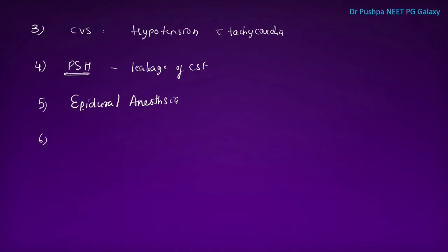Next important topic: malignant hyperthermia. It is a syndrome of rapidly rising temperature due to abnormality of ryanodine receptors. The clinical features include masseter muscle spasm.